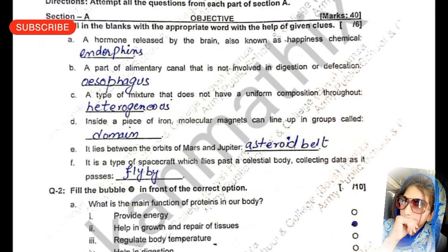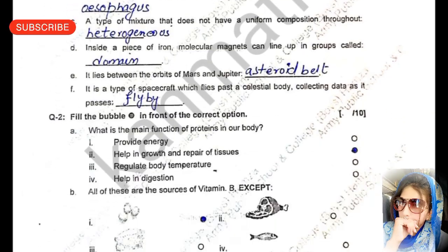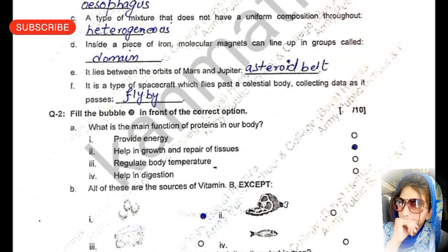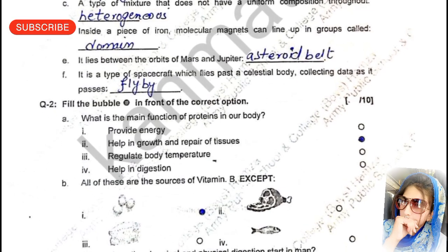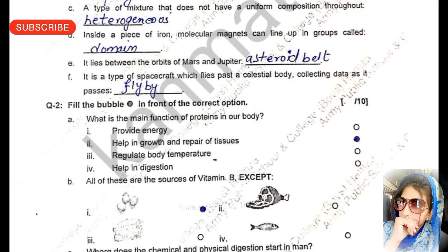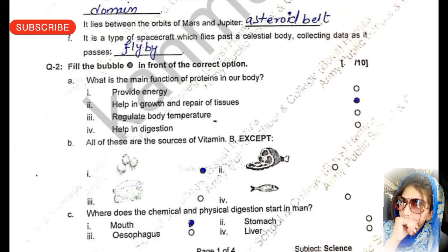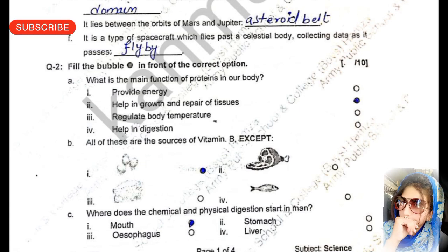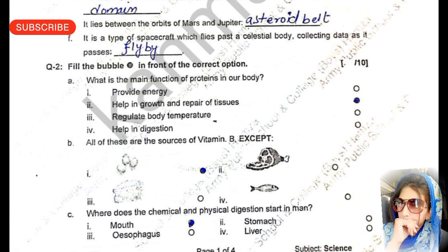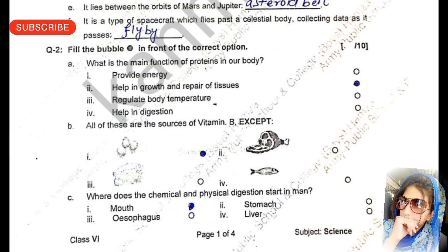Now the correct answers for question number two — fill in the bubble in front of the correct option, 10 marks. For the first MCQ: what is the main function of protein in our body? The second option is correct.